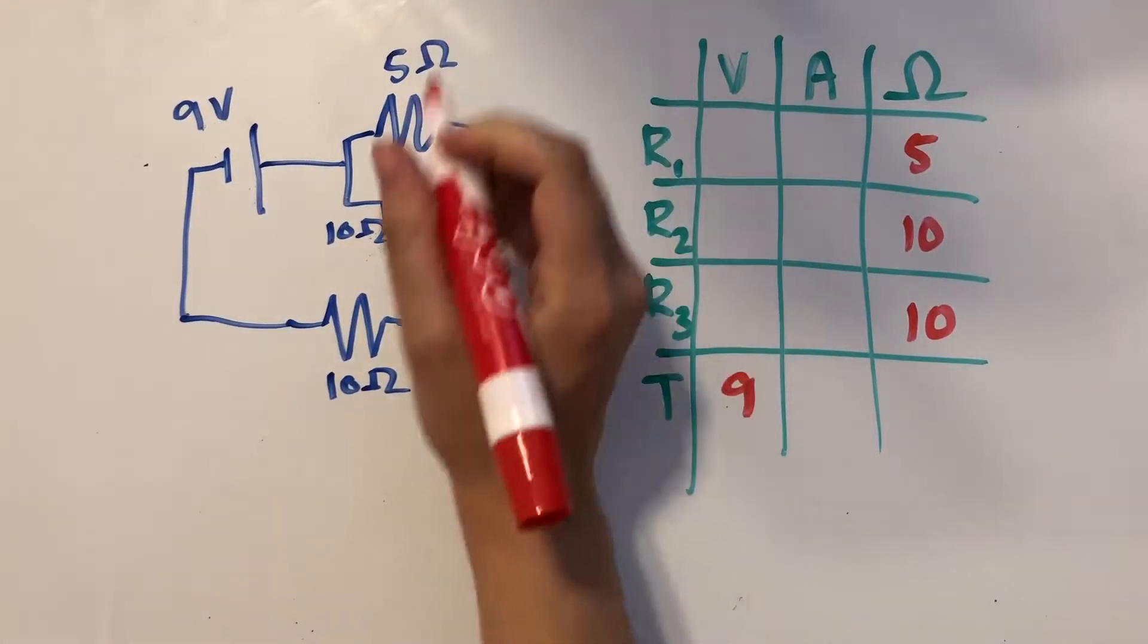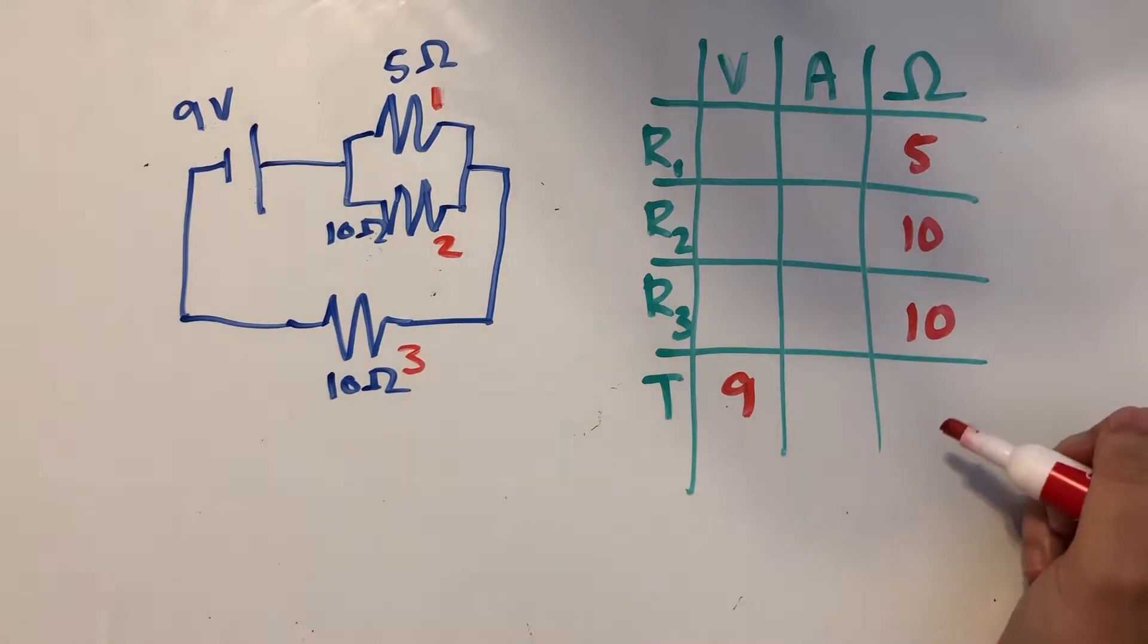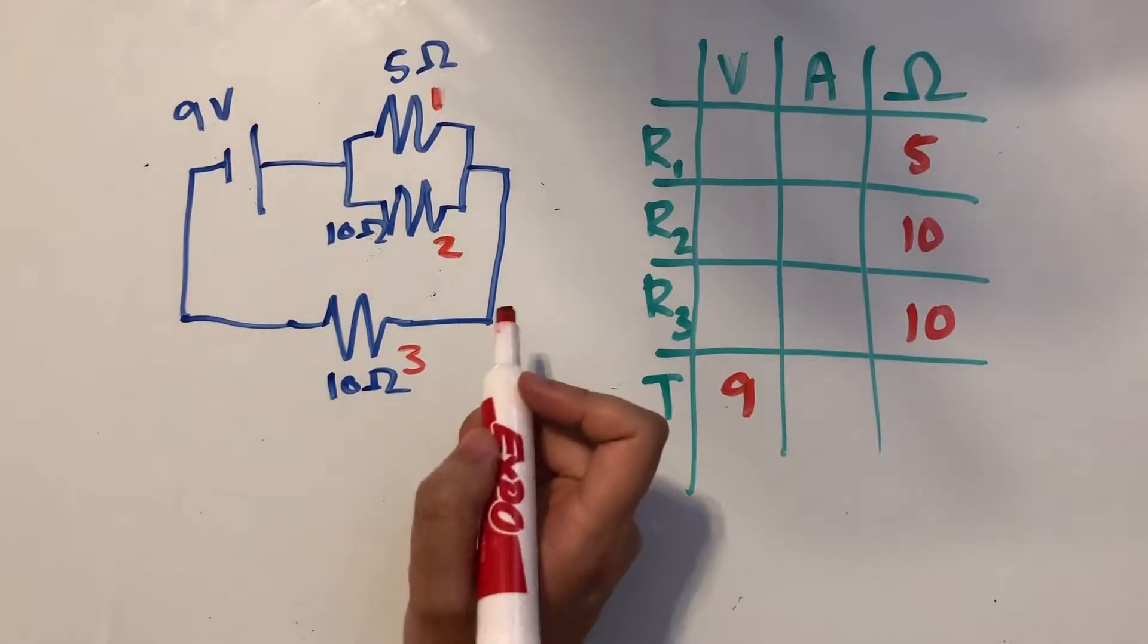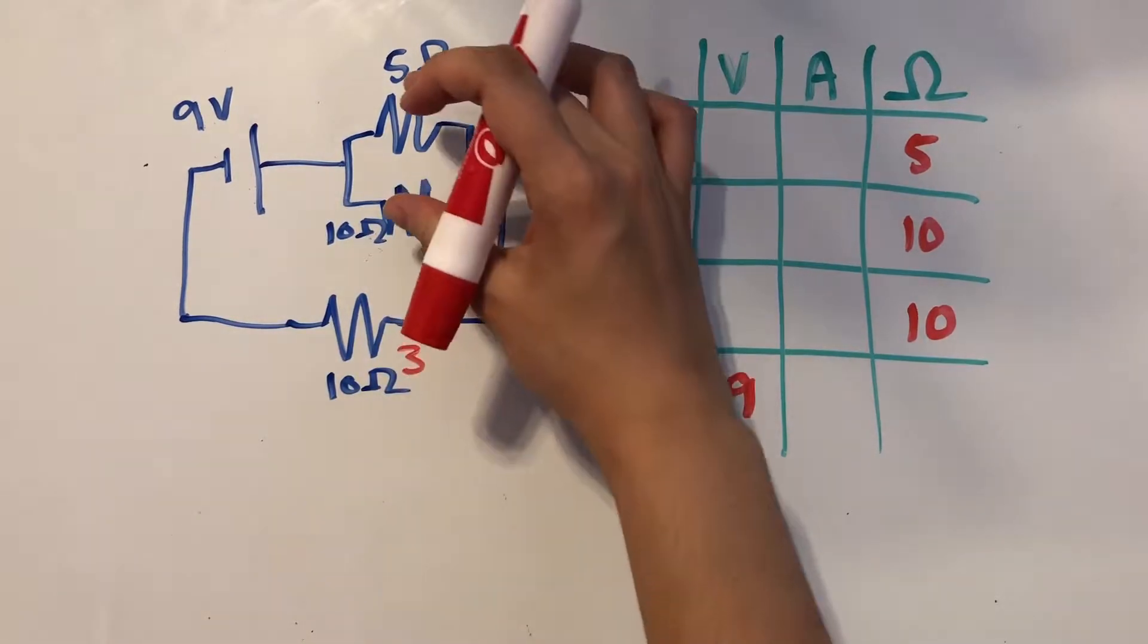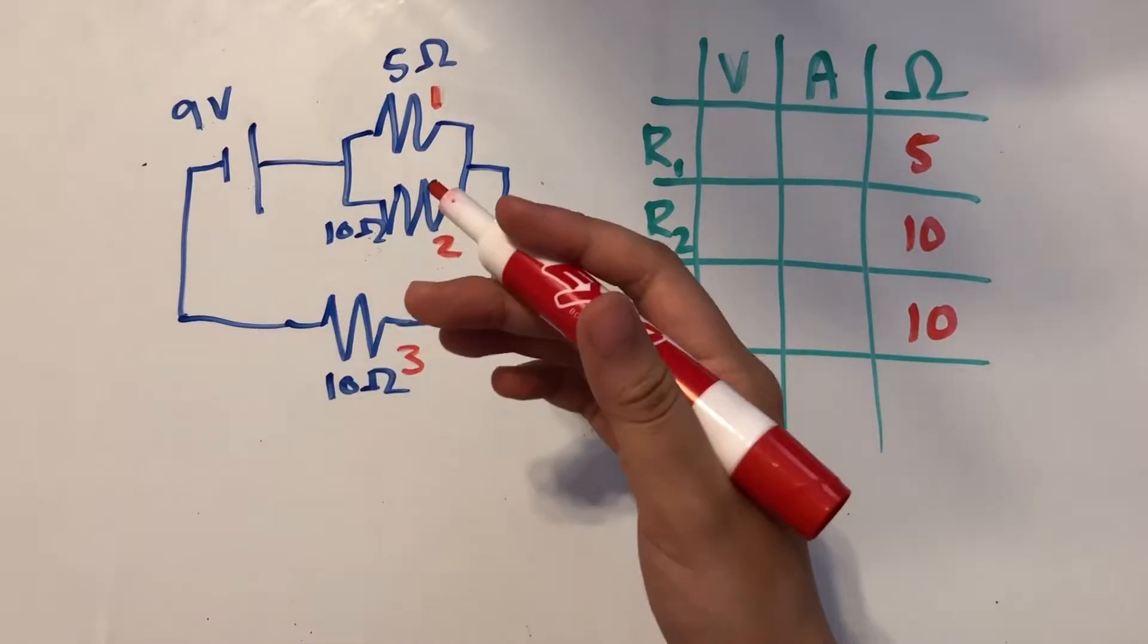So let's go and define this as resistor 1, this is resistor 2, and this as resistor 3. To find the total resistance, what I would do is combine these two resistors which are in parallel and find an equivalent resistance for that.